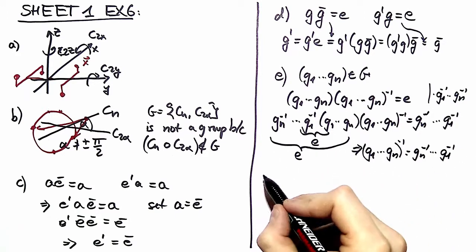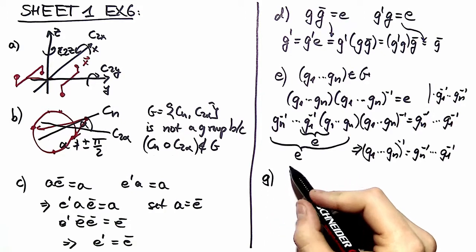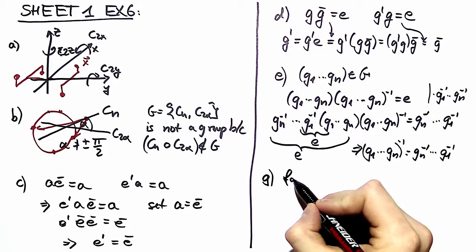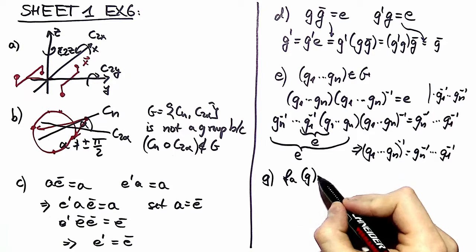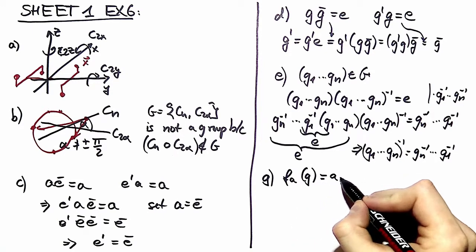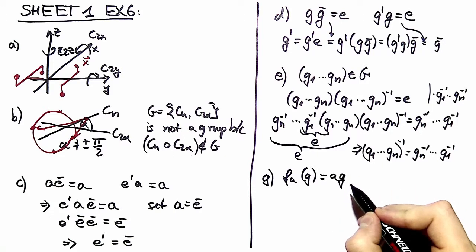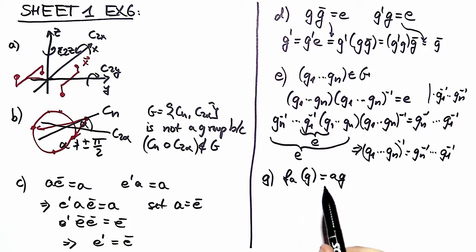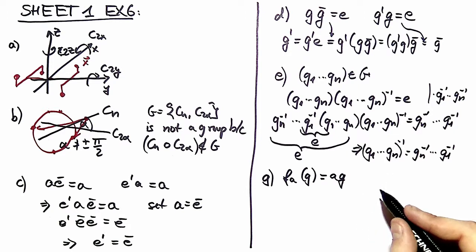F is left out now we move to G. In G we have a function depending on a group acting on a group element g, and this is a left multiplication by a. We have to show that this function acting on a group element is a bijective map.